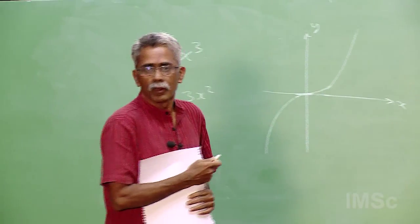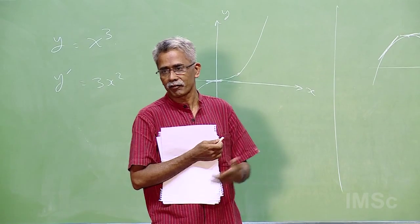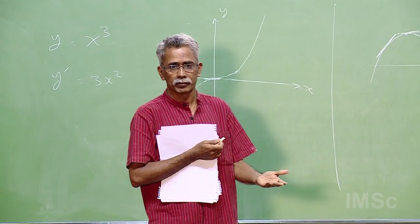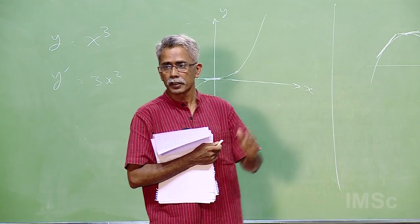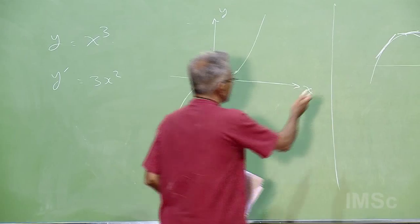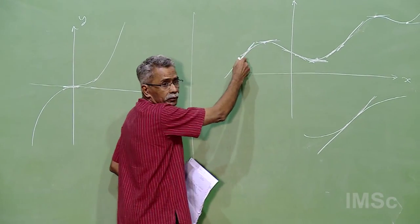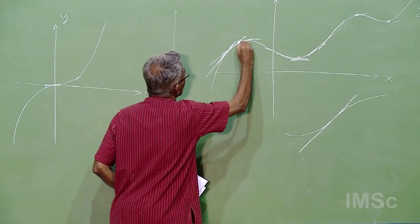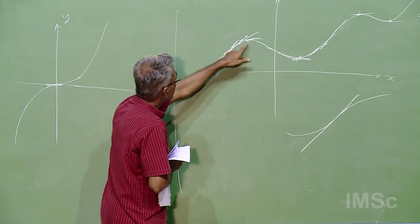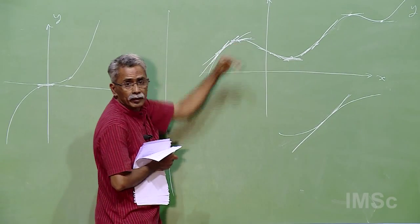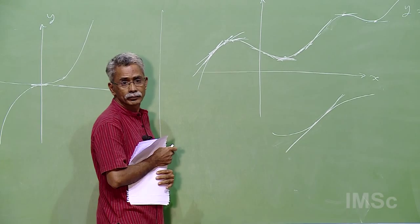What the second derivative tells you is the rate at which the slope of the tangent changes. After all, slope is given by the first derivative — the rate at which the function is changing. Therefore, it stands to reason that the second derivative should tell you the rate at which the slope is changing. Near the local maximum, the slope is positive but decreasing — becoming less steep, then horizontal — which means second derivative is negative.